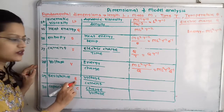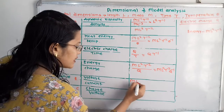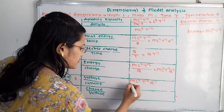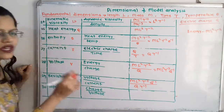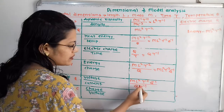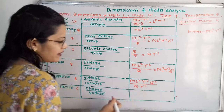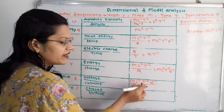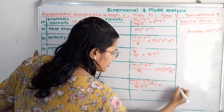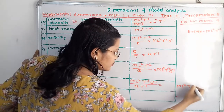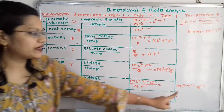Then resistance R. Resistance is voltage by current. Voltage is ML squared T raised to minus 2 Q raised to minus 1, divided by current QT raised to minus 1. Taking Q to the numerator gives Q raised to minus 1, and Q raised to minus 1 combined gives Q raised to minus 2. Taking T raised to minus 1 to the numerator gives T raised to plus 1, so minus 2 plus 1 equals T raised to minus 1. The dimension is ML squared T raised to minus 1 Q raised to minus 2.